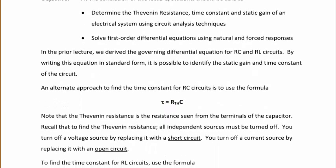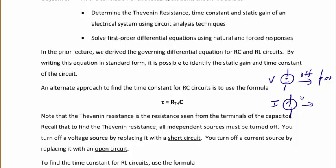Remember, you must have all of the independent sources turned off in order to find the Thevenin equivalent resistance. The way that we turn off a voltage source is by replacing it with a short circuit, which represents zero volts. And the way that we turn off a current source is by replacing it with an open circuit, because that represents zero amps.